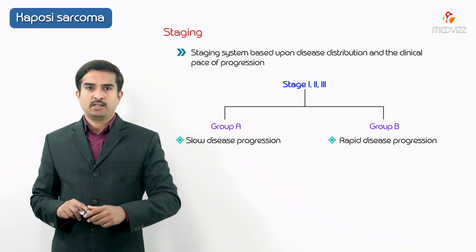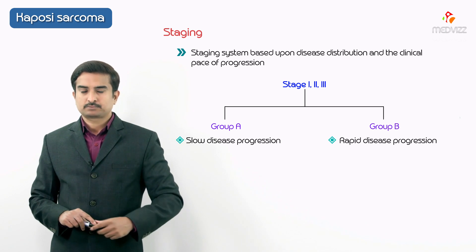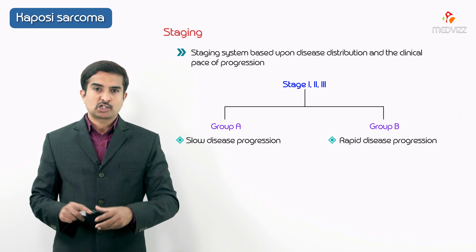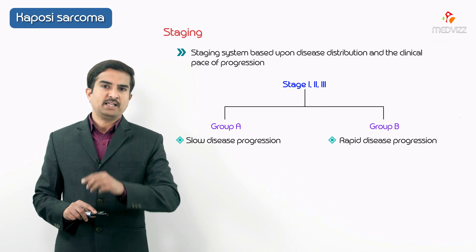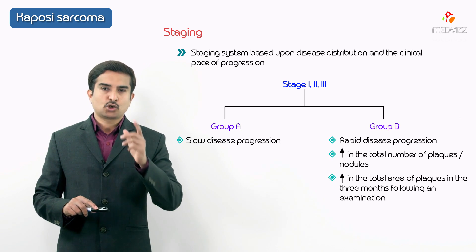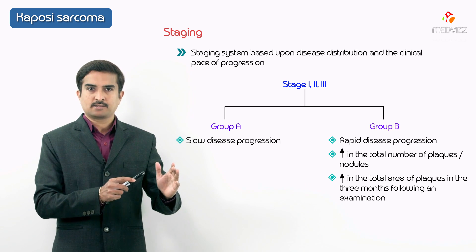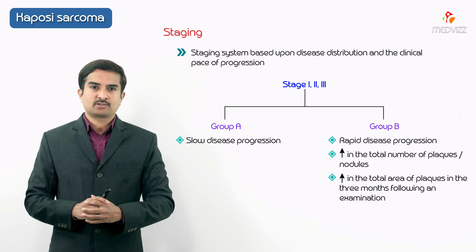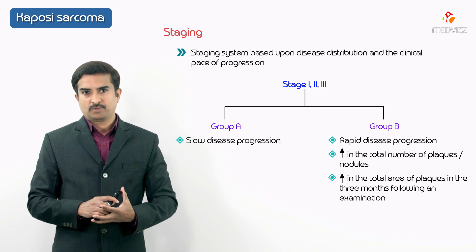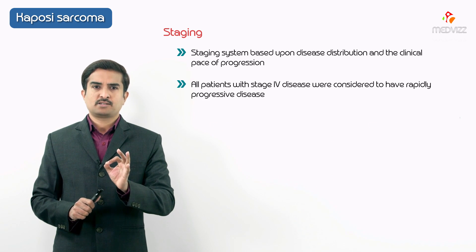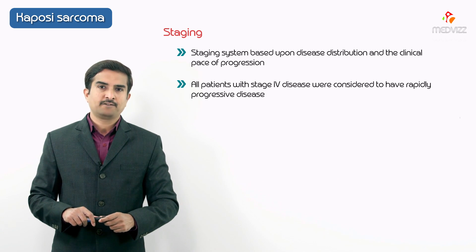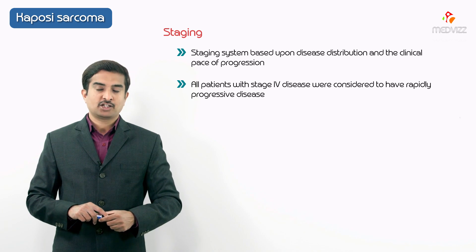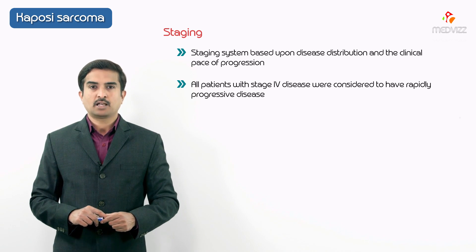Group A represents the slower form of the disease. Group B is defined as an increase in the total number of plaques or nodules, or in the total area of plaques, in the three months following an examination. All patients with stage 4 disease are considered to have a rapidly progressive course. This is how the stages of Kaposi sarcoma are classified.